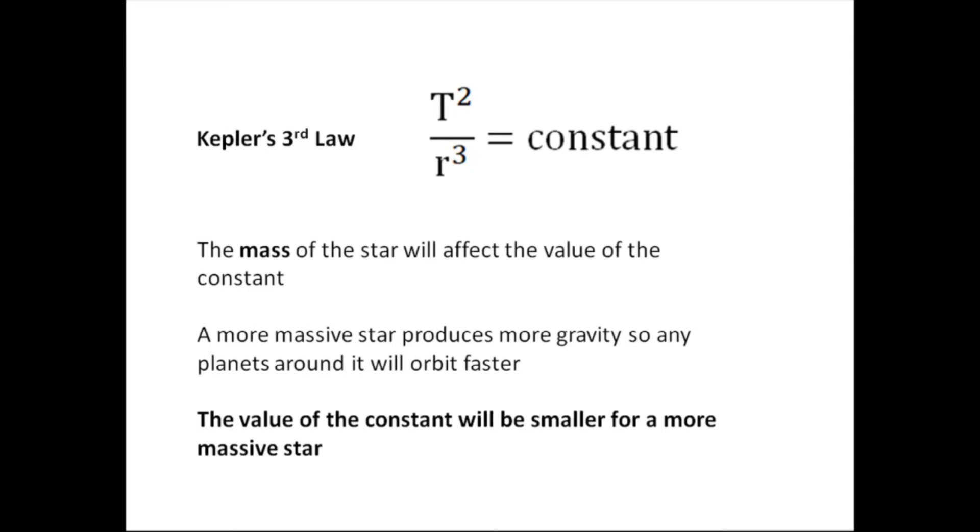So, Kepler's third law says that t squared over r cubed equals a constant. Now, something which will affect the value of the constant is the mass of the star. If the star has a bigger mass, then it produces more gravity, and that means that the planets will whiz around it faster.